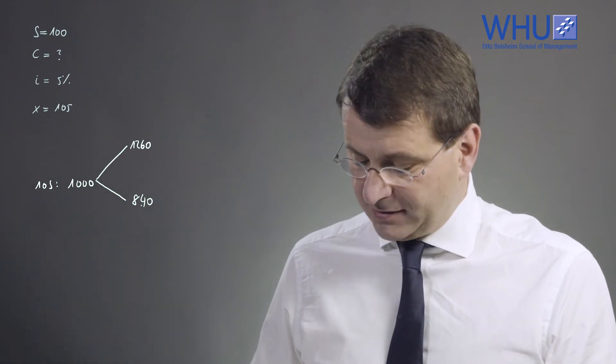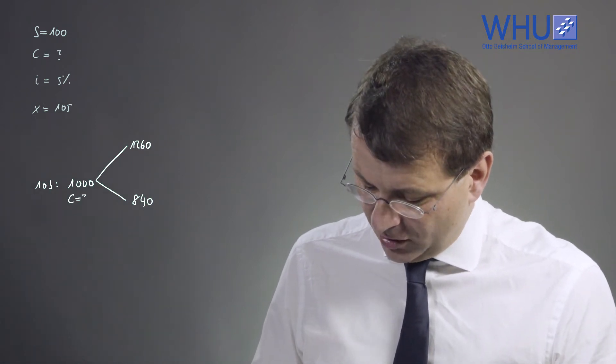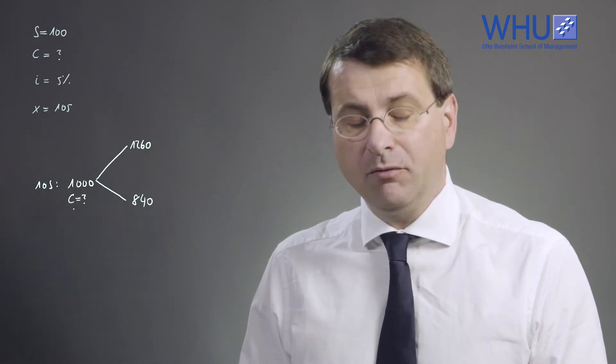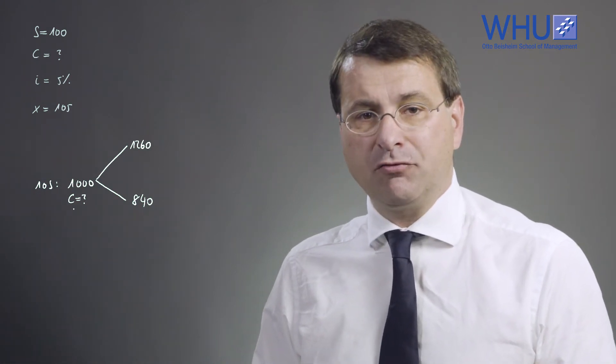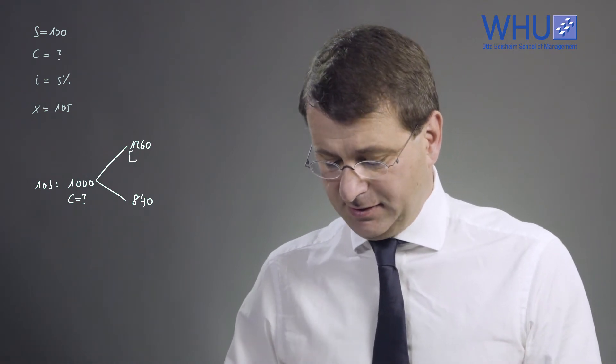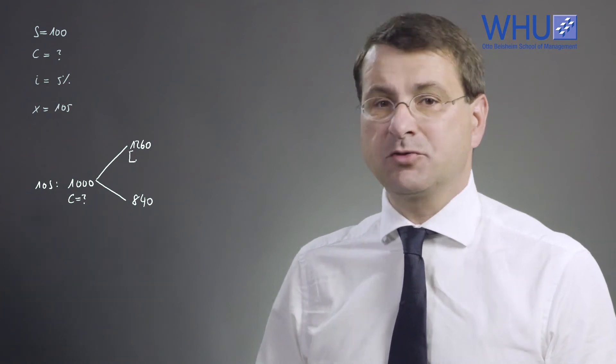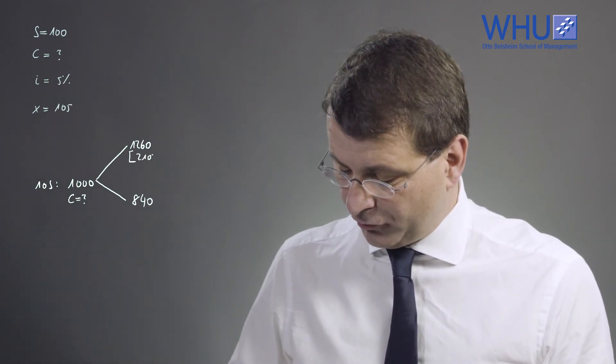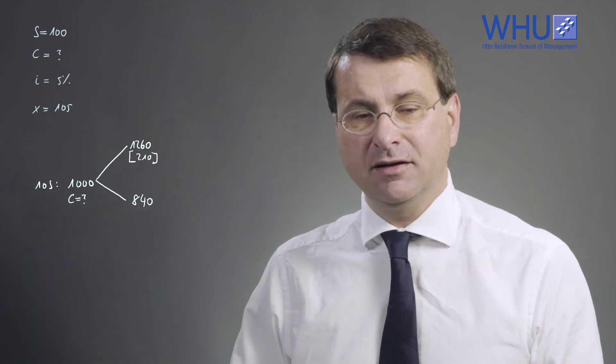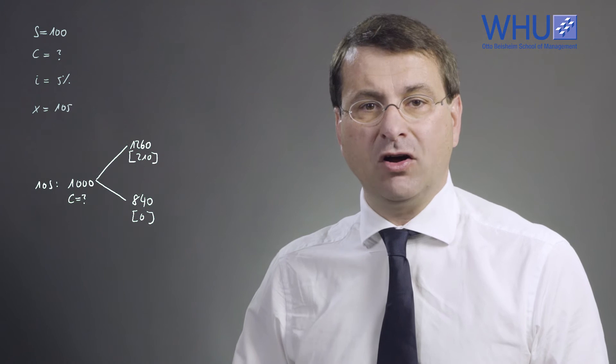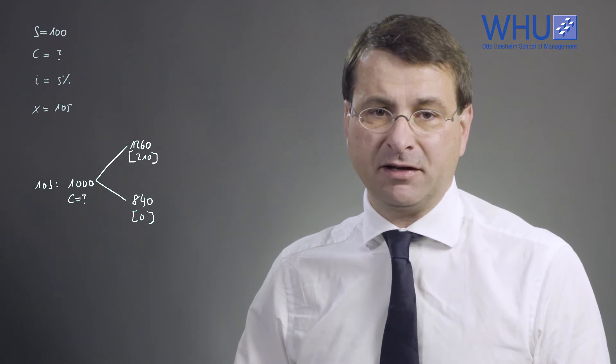What we do not know is what the value of the call option is on that stock portfolio, but what we do know is what the value of the call option portfolio is when the stock expires. Namely, since the exercise price of 10 call options is 1050, the value of the call portfolio is 210 in the up state and zero in the down state because the call options expire worthless in that particular state.